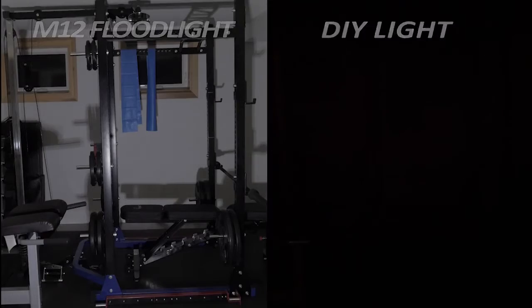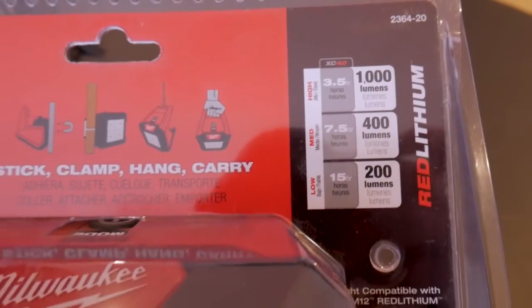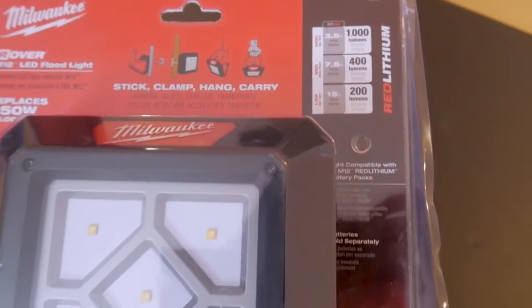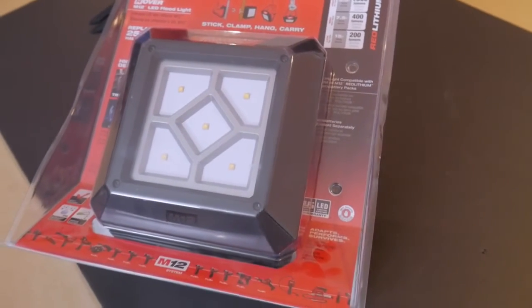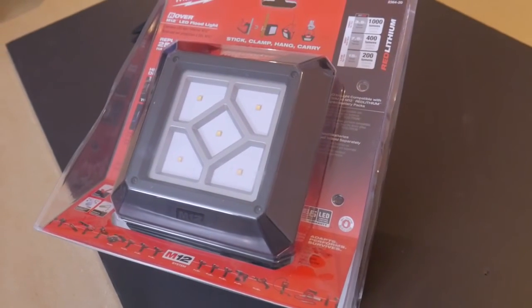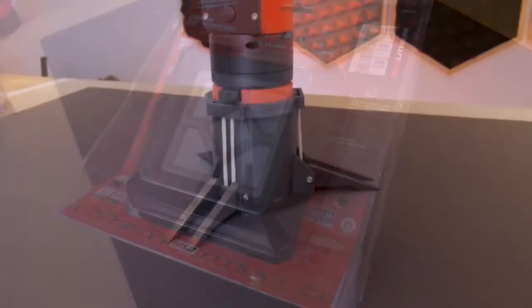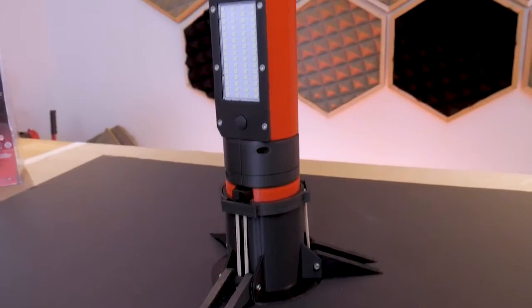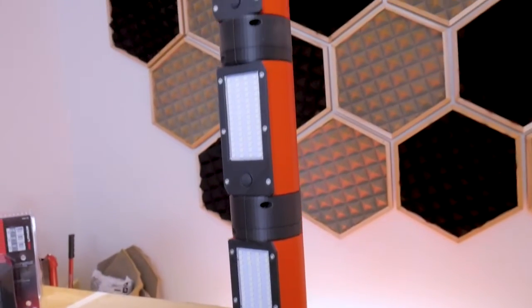The next comparison is the battery life. The Milwaukee floodlight claims that on a 4-amp-hour battery on the brightest setting it will last about 3.5 hours. By my calculations, my light will only last about two hours on the brightest setting with the same battery, so yeah, the Milwaukee takes this one too.